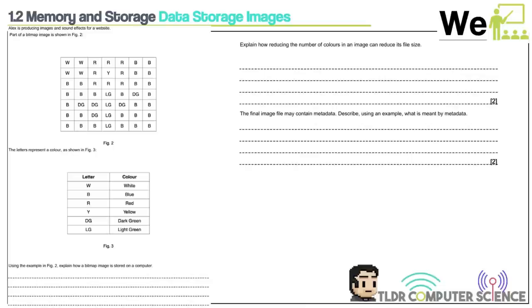Now looking at storage of images — specifically bitmap images. A bitmap is made up of individual pixels with different colours. Two factors improve image quality: colour depth (how many colours can be displayed — more colours means higher quality but larger file size) and resolution (the amount of pixels used — high resolution means a sharper image).